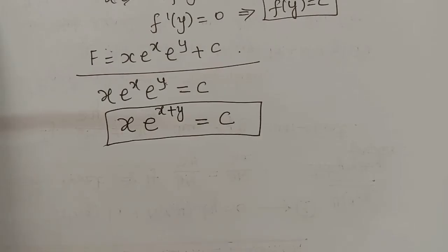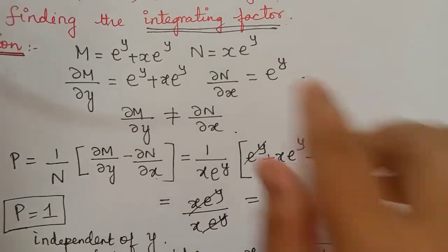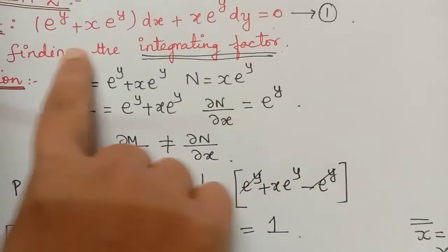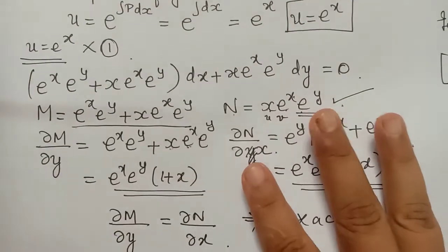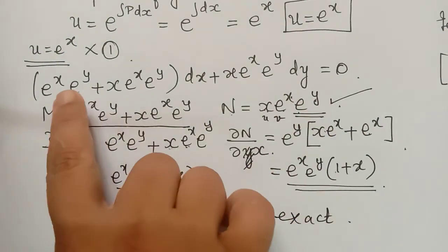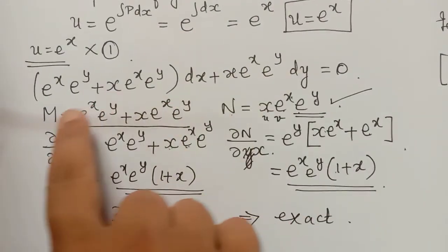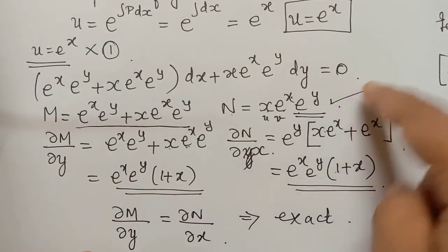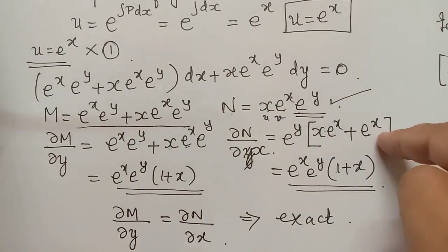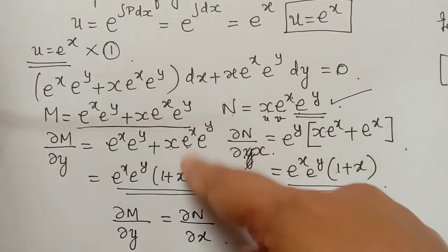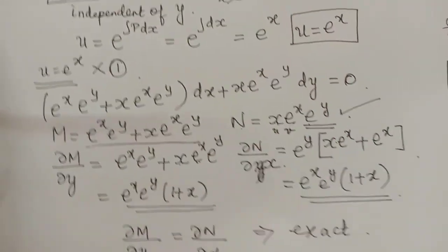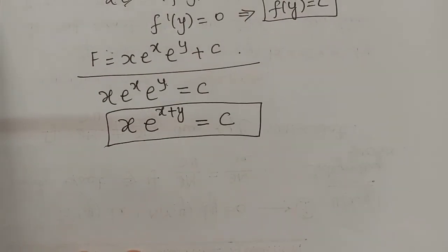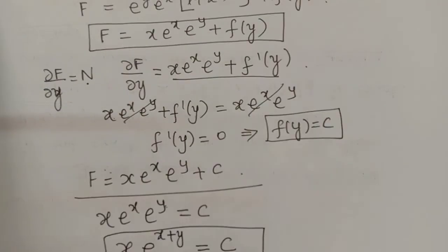We could also have solved this easily from the beginning by dividing by x·e^y, or after finding the integrating factor by dividing by x·e^x·e^y and using variable separable method. But because we are dealing with the exact equation method, we adopted the prescribed approach. Hope you have understood this concept — thank you.